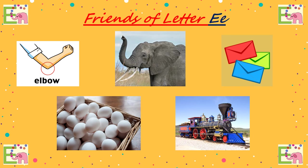Now we have friends of letter E. Elbow — we all have elbows, right? How many elbows do we have? Two on each hand. Elephant, envelopes, eggs, and engine. So now you have to find out some more words which start with letter E at your home and let us know next time.